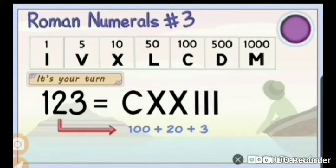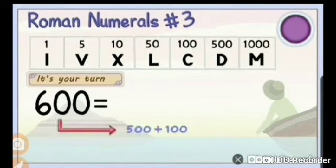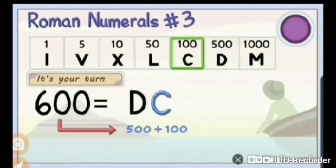Now, let us look towards another example, 600. Now we already know the rule that when a smaller number or smaller symbol is written to the right of bigger symbol, the numbers are added. So over here, 600 is 500 plus 100. That means DC will give us 600.